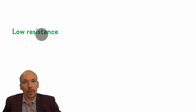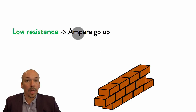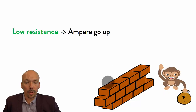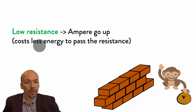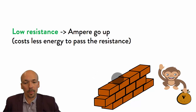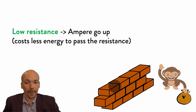On the other hand, if you have a low resistance, then you have a low wall, so the current goes up. It's fairly easy for the amps to jump over the wall. So it costs less energy to pass through a low resistance. And that's why components that need a lot of energy have a very low resistance — so the current can pass through fairly easily.